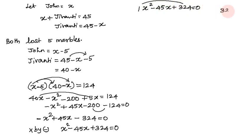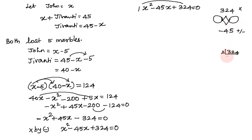We need two numbers whose product is 324 and whose sum is 45. Factorizing 324: 324 equals 2 times 2 times 3 times 3 times 3 times 3. We try factor pairs. 36 times 9 equals 324, and 36 plus 9 equals 45. So the two numbers are 36 and 9.